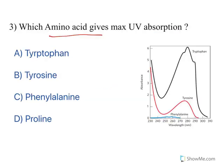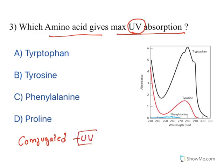Moving to the next one: which amino acid gives maximum UV absorption? This is an interesting question related to analysis of amino acids. When a molecule has conjugated double bonds, it will have UV absorption — ultraviolet light can be absorbed. What do you mean by conjugated double bonds? Look at benzene: it has a double bond followed by a single bond, then a double bond followed by a single bond, and so on. This pattern is called conjugated double bonds. When a molecule has more conjugated double bonds or more resonance structures, absorption occurs in the UV region.